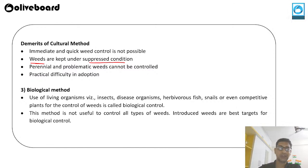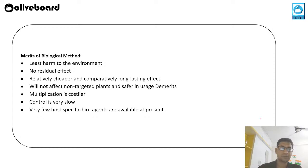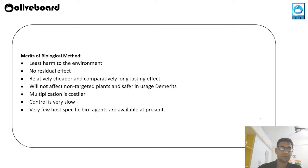The third method is biological weed control, which uses living organisms — insects, disease organisms, herbivores, fishes, snails, or even competitive plants — for the control of weeds. This method is not useful to control all kinds of weeds; it can only be used for a few crops. Introduced weeds are the best targets for biological control.